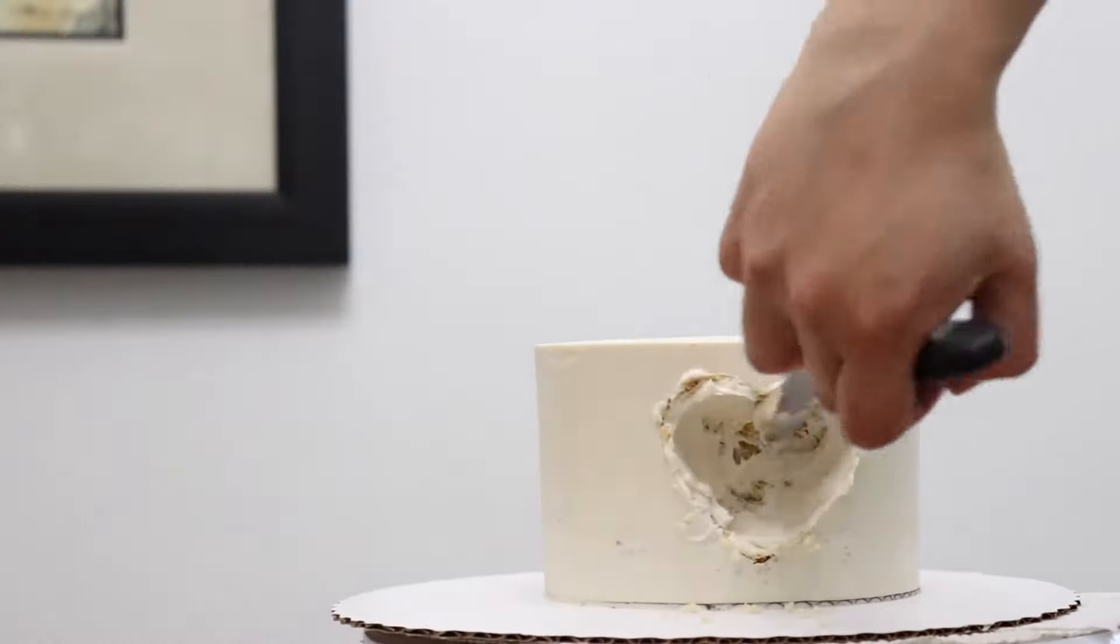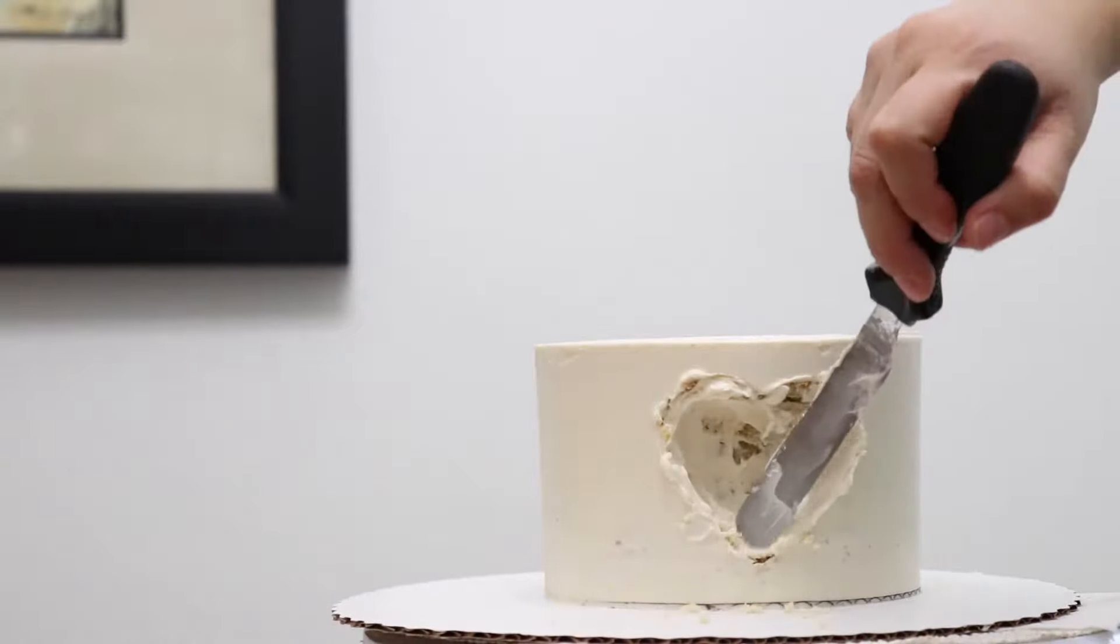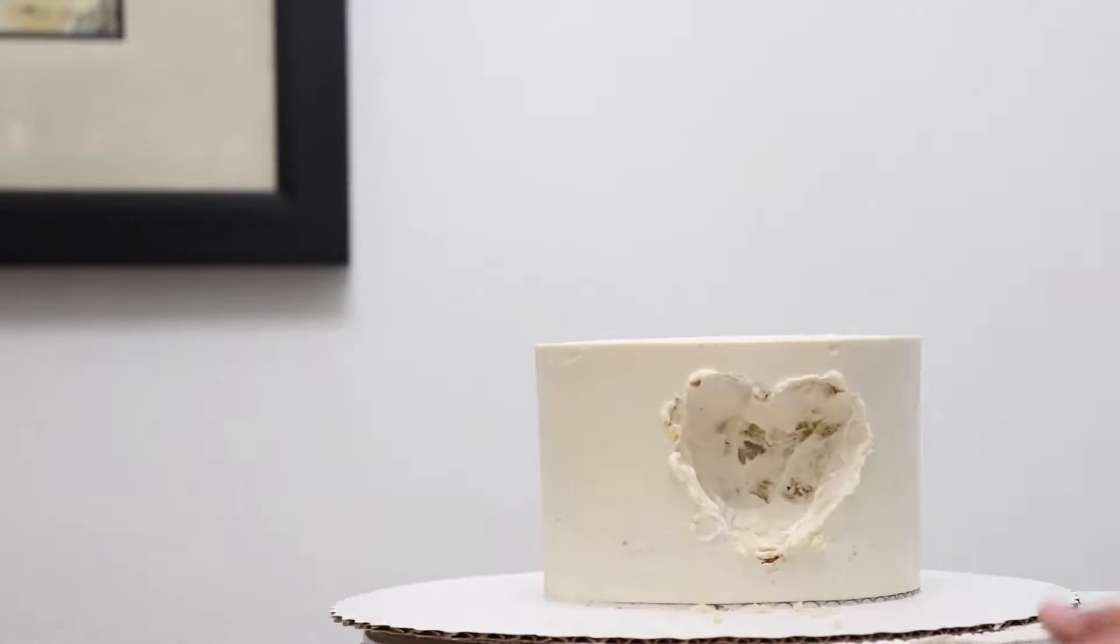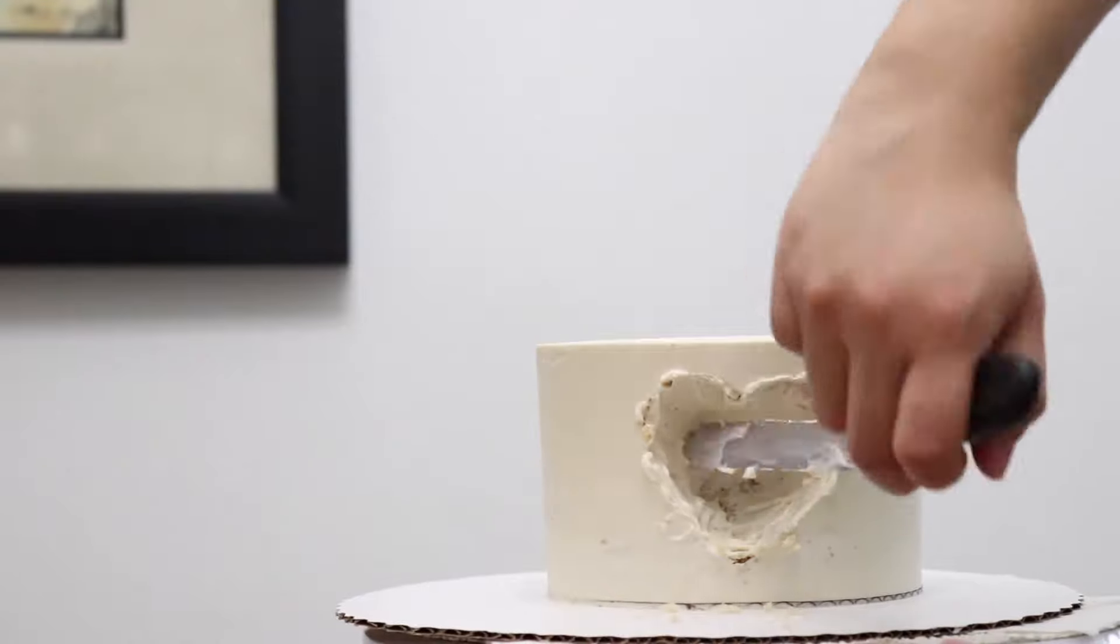Apply a crumb coat of buttercream to the part we just carved out. Put the cake in the fridge for about 50 minutes before you apply the fondant.